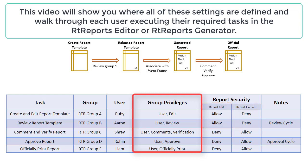In contrast, Shrey, Rohin, and Liam have allow set on some reports under report execute. Report execute means these users have been granted the respective permissions in the RT reports generator for comments, verifications, approvals, printing, or official printing.